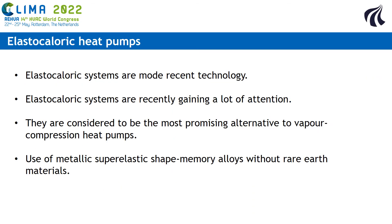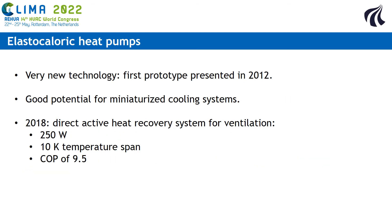The elastocaloric systems are a much more recent technology, but they have been gaining a lot of attention recently, and they are considered by some as the most promising alternative to vapor compression heat pumps. Elastocaloric heat pumps use metallic super-elastic shape memory alloys that do not contain any rare earth materials. The elastocaloric technology is quite new, and the first prototype was presented in 2012, but it has good potential for the miniaturization of cooling systems. In 2018, a direct-active heat recovery system for ventilation was tested with a power of 250 watts, a temperature span of 10 kelvin, and a COP of 9.5.